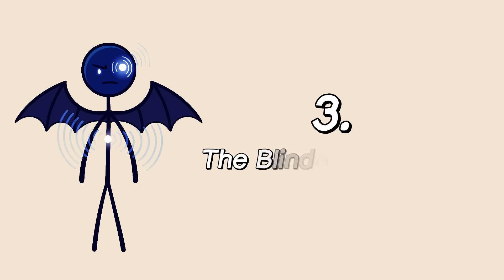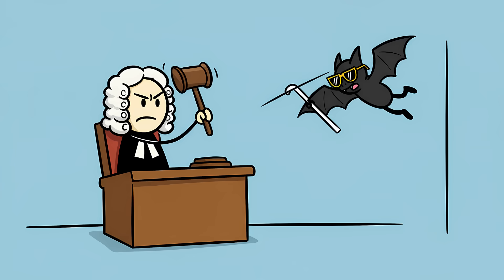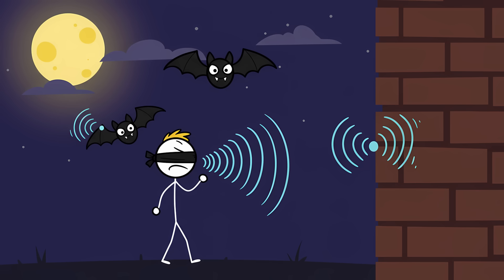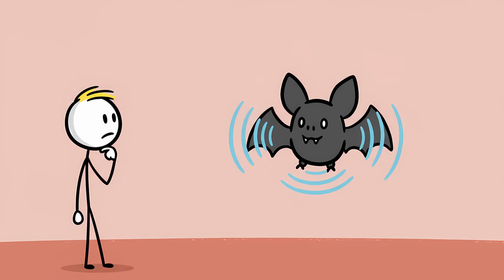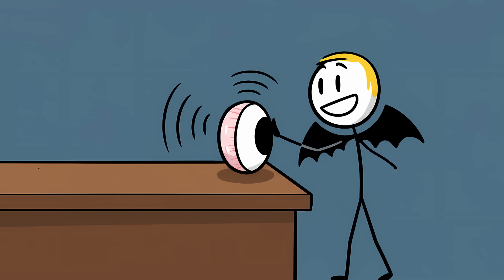Number three. The blindness of bats. Blind as a bat. The phrase is so common, it's practically a law of nature. We picture bats as these clumsy, sightless creatures, stumbling through the night, entirely dependent on a magical sonar system to keep from flying into walls. Their eyes, we assume, are just decorative little beads. Vestigial organs from a time before they evolved their cool, clicking superpower. They traded the world of sight for the world of sound.